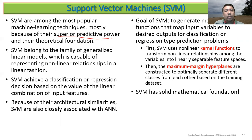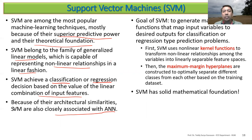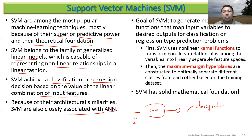SVM belongs to the family of generalized linear models, capable of using nonlinear relationships in the data — your input may be nonlinear, but SVM treats it as linear. It can be used for both classification and regression based on the value of a linear combination of input features. The goal of SVM is to generate a mathematical function that maps input variables to the desired output — classification with discrete class numbers or regression.